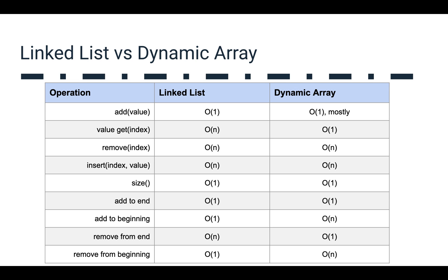When we remove from the end, with a linked list that's costly because we have to figure out where the new tail is — that requires iterating all the way to the end, so that's not great. But with a dynamic array, removing from the end is just taking that last thing off — that's O(1). And removing from the beginning: with a linked list, we just set the head to the next thing, so that's a constant time operation. But in a dynamic array, that's O(N) because we have to move everything into place. So you can see there's some nuance between linked lists and dynamic arrays — they kind of accomplish the same thing but have different trade-offs.